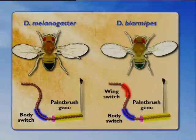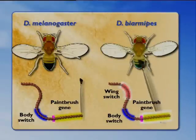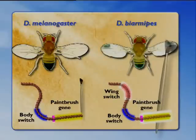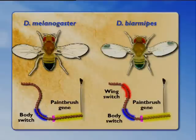But in the spotted fruit fly, there's an additional switch — a switch that draws a spot in the wing — such that the paintbrush is also used, in addition to its other jobs, in drawing a spot on the wing of these fruit flies. The same principle applies to butterflies.